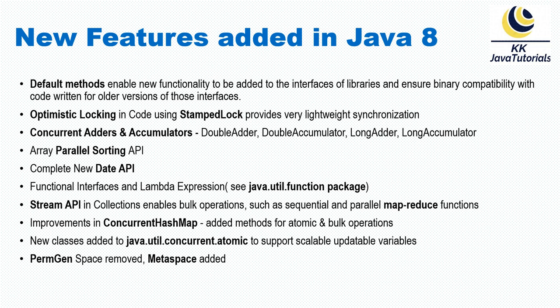Last but not least, there is PermGen space removal in JDK 1.8. Prior to JDK 1.8, we had PermGen, and when you ran your application the metadata of classes was loaded into the PermGen space. From Java 8 onwards, PermGen has been removed and replaced with Metaspace. You may have encountered the java.lang.OutOfMemoryError: PermGen space error before JDK 1.8. In Java 8, Metaspace takes memory directly from your RAM and is much more flexible, helping to avoid out-of-memory errors as much as possible.